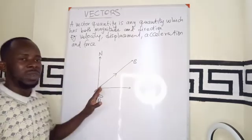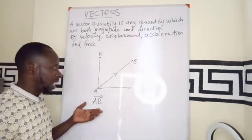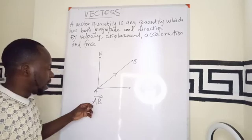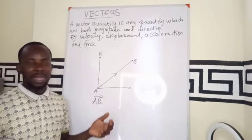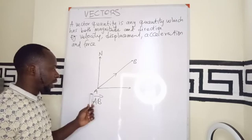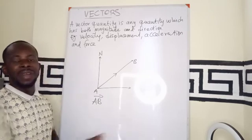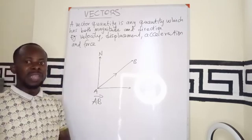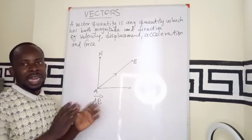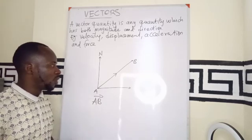So this is an example of a vector. Vectors are represented by block letters as capital letters AB with an arrow. The arrow shows the direction. From which point are we moving to which point? That is the direction aspect of it.